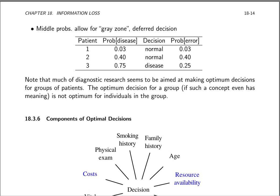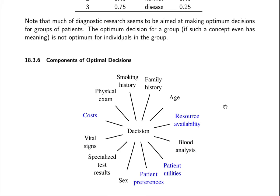So what are the components of optimum decisions? This is not all-inclusive, but covers many of the components. We have standard things like age, family history, smoking history, physical exam, vital signs like blood pressure, specialized test results and biomarkers, the sex of the patient, and blood analysis. But in addition to those things, what goes into decisions includes whether there are resources available to take the desired action, what a patient wants or the utilities for various options given by patients, what are the patient's preferences — some patients have religious convictions that prevent them from having certain treatments — and what are the costs of the various treatments and diagnostic options. Those are many of the things that need to be considered when making an optimum decision.